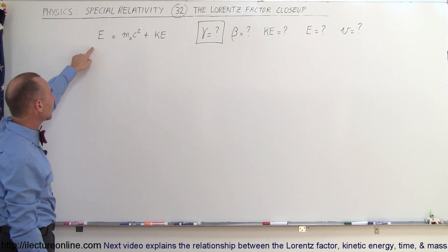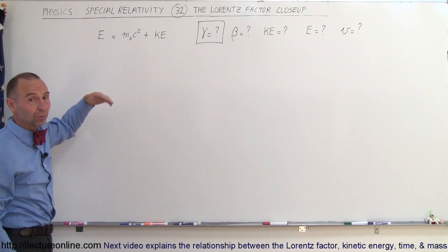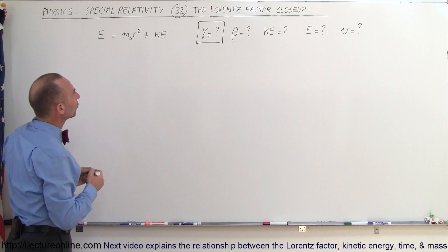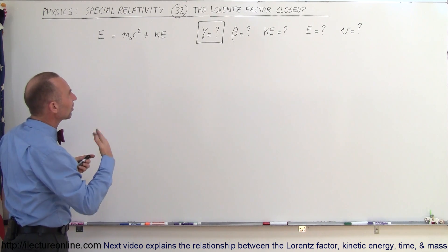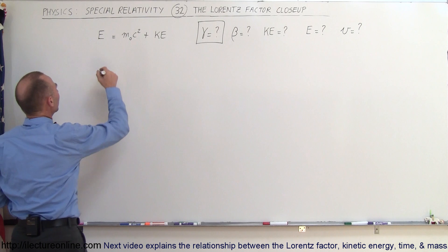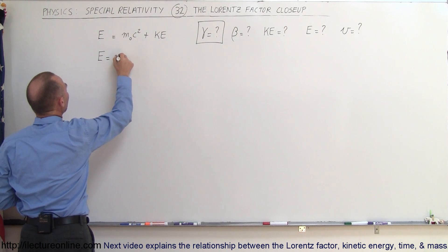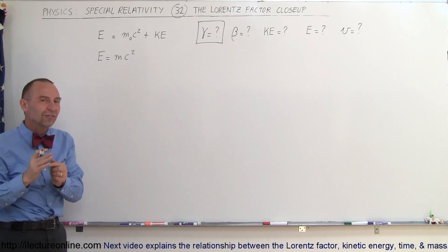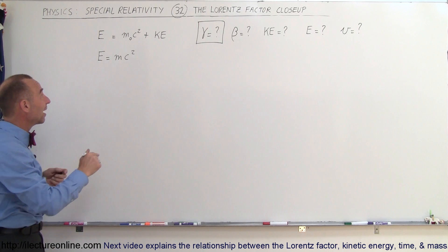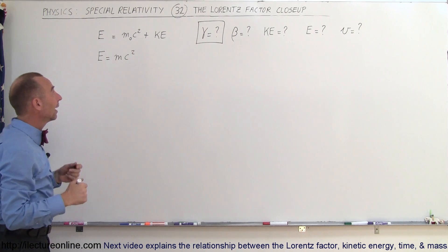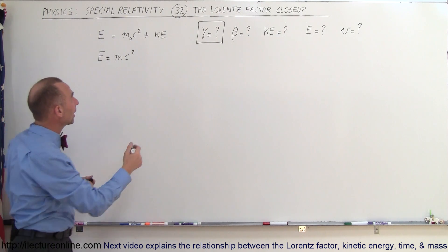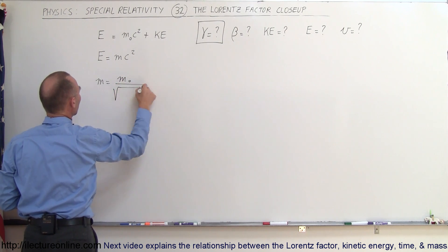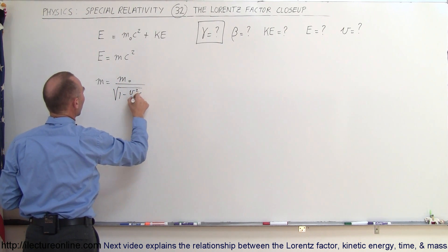The basic equation states that the total energy is equal to the rest mass energy plus the kinetic energy. The total energy can also be written as MC squared — but here M is no longer the rest mass; it is the relativistic mass. When objects move very fast, M becomes bigger than M sub-naught. The relationship between M and M sub-naught is: M equals M sub-naught divided by the square root of 1 minus V squared over C squared.